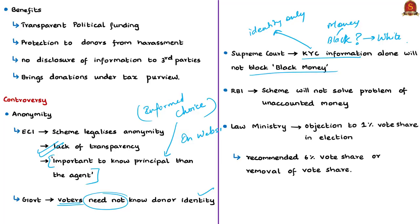Recently, the controversies have surfaced again. Yesterday there was a news article mentioning some concerns of RBI with respect to this electoral bond scheme. RBI had advised the government that electoral bonds will not solve the problem of unaccounted money or black money because the donor's identity will never be known. This concern of RBI was mentioned in communications on electoral bonds between the RBI and the Ministry of Finance. These communications were obtained by an RTI activist through an RTI application, and showed that RBI had expressed serious concerns on electoral bonds but the ministry implemented the system without addressing those concerns.